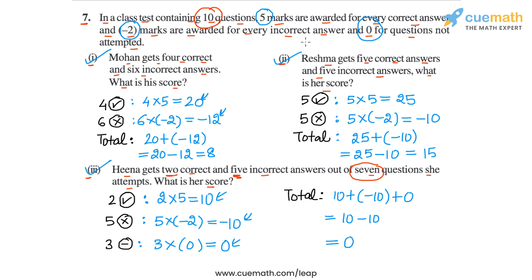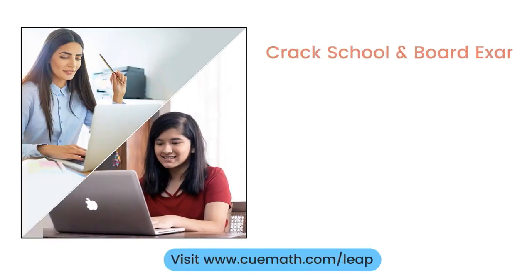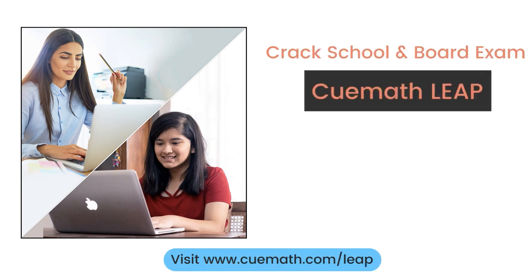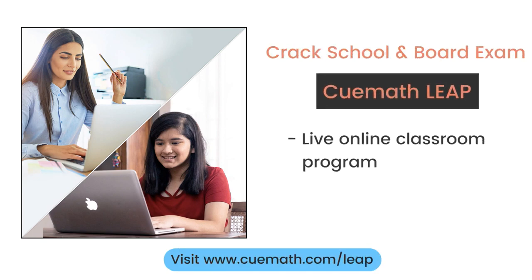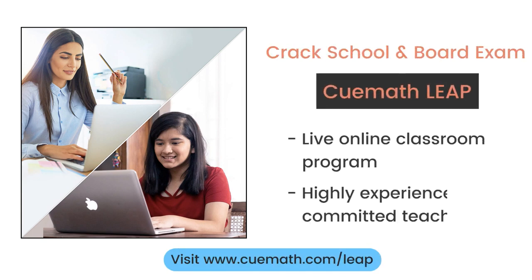So the answers for this question are: Mohan's total score is 8, Reshma's total score is 15, and Hina's total score is 0. With this we have completed question number 7. To learn more about how QMath can help you crack school and board exams, explore QMath Leap — a live online classroom program run by highly experienced and committed teachers.